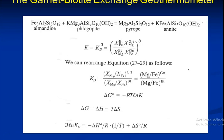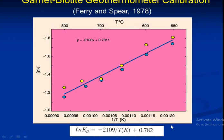The garnet-biotite exchange geothermometer means almandite plus phlogopite is converted into pyrope and annite. After the calculation we get the resulting equation. The garnet-biotite geothermometer calibration is after Harry and Speer 1978, and after solving this equation we get the formula.